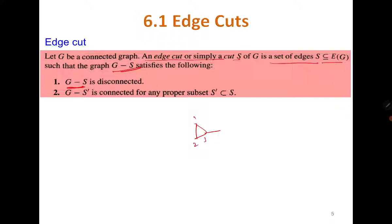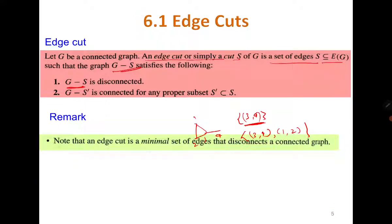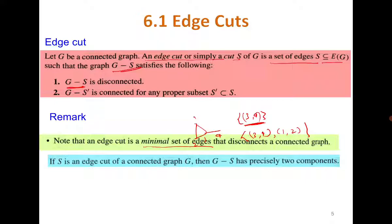For example, consider a graph with vertices 1, 2, 3, 4. The edge cut is simply {3,4}. When we delete edge {3,4} the graph becomes disconnected. If we also delete edge {1,2}, the graph remains disconnected, but it does not make sense since {3,4} alone already disconnects the graph. So an edge cut is a minimal set of edges that disconnects a connected graph. If S is an edge cut, then g minus S has exactly two components.